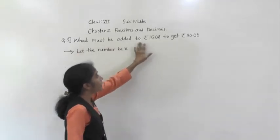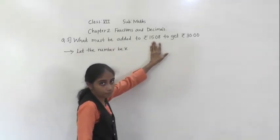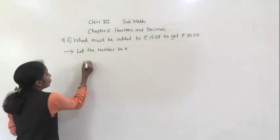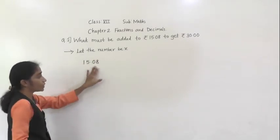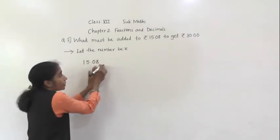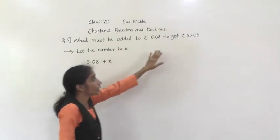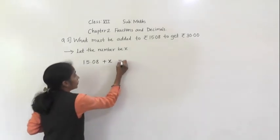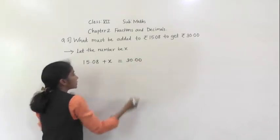So let the number be X. What must be added to rupees 15.08? In 15.08, what to add? We don't know, so that number we consider X. So I plus X to get rupees 30.00.